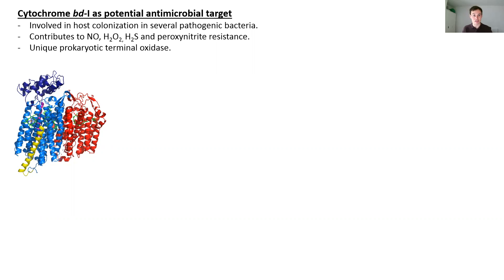They are interesting targets for potential antimicrobials as they are unique to archaea and bacteria, plus the structure has been solved by cryo-EM as shown here for E. coli. This structure of cytochrome BD1 consists of two main subunits, SubA and SubB, along with a couple of single alpha helices. Quinol will bind to the quinol binding site around here involving the flexible Q-loop, then electrons are transferred through the three different heme groups onto oxygen, which is reduced to water at the heme D site.